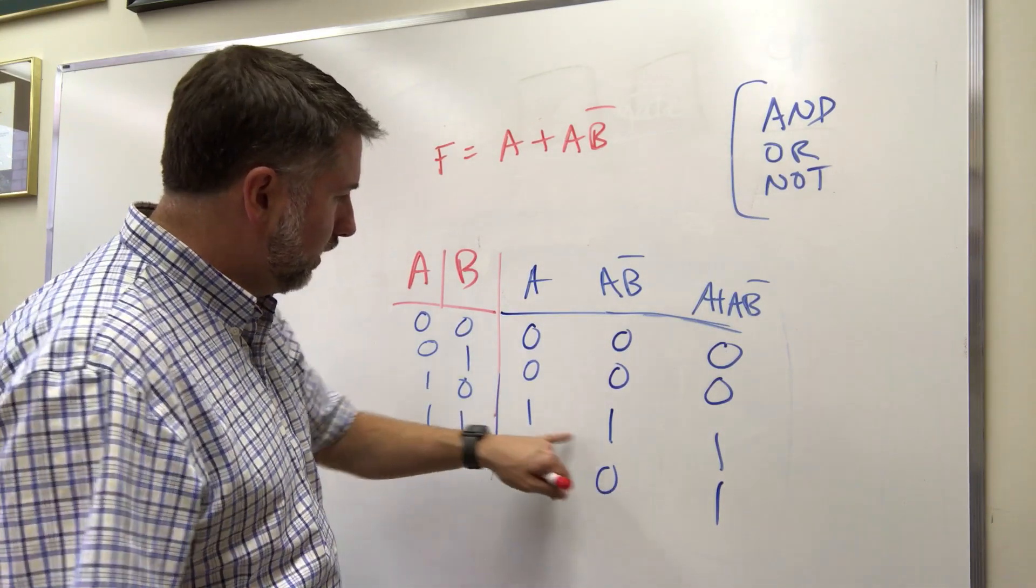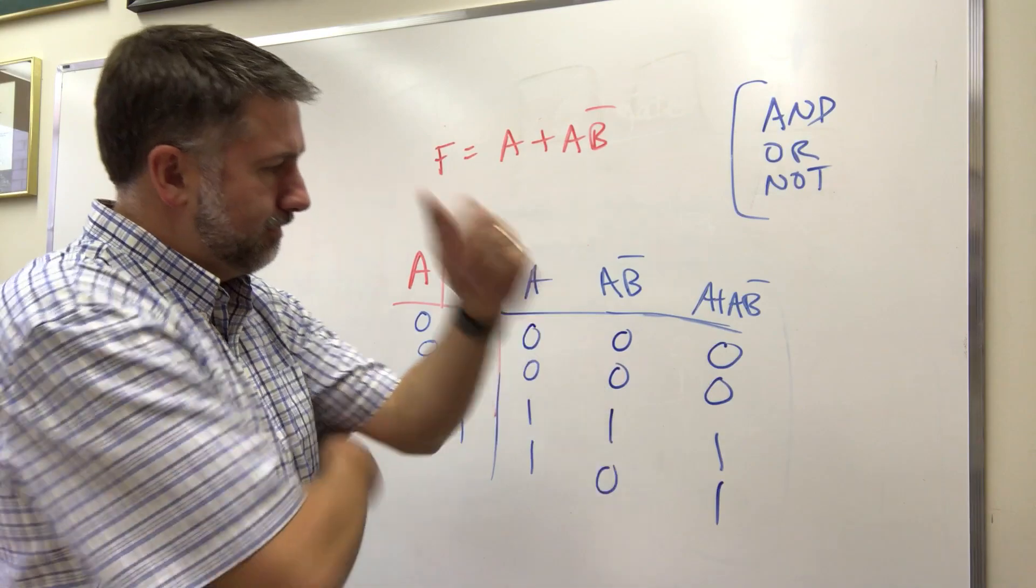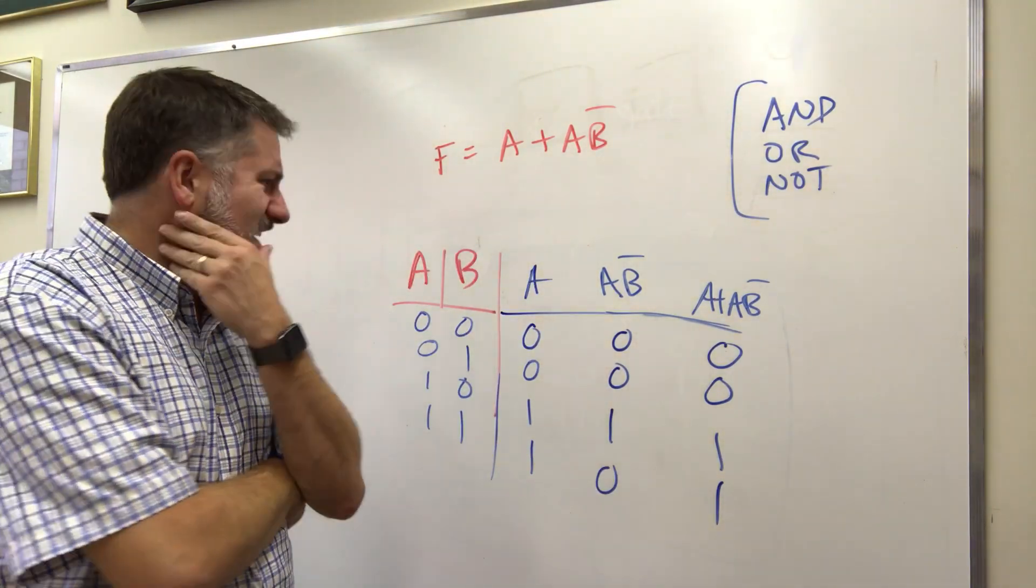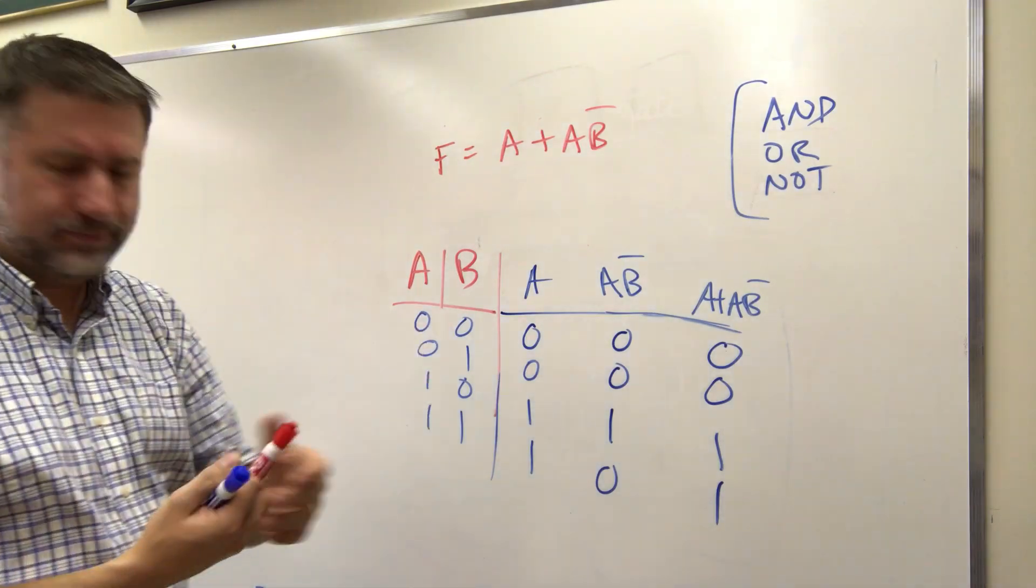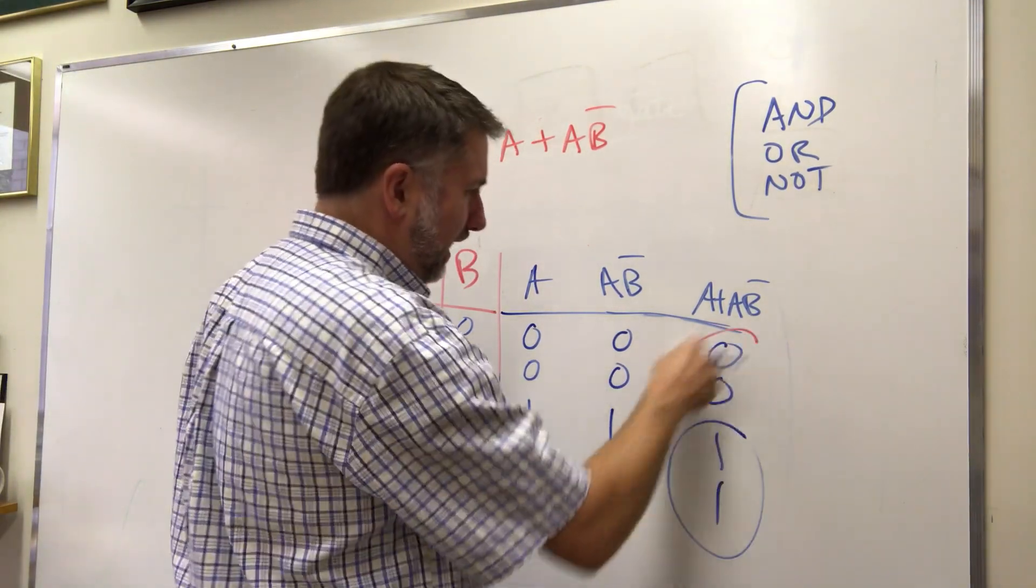So this is true if there's a one there, these two ones mean that A or A B prime. Does that look like anything that we recognize? I kind of think it looks a bit like A. Right, it's true when A is true, it's false when A is false.